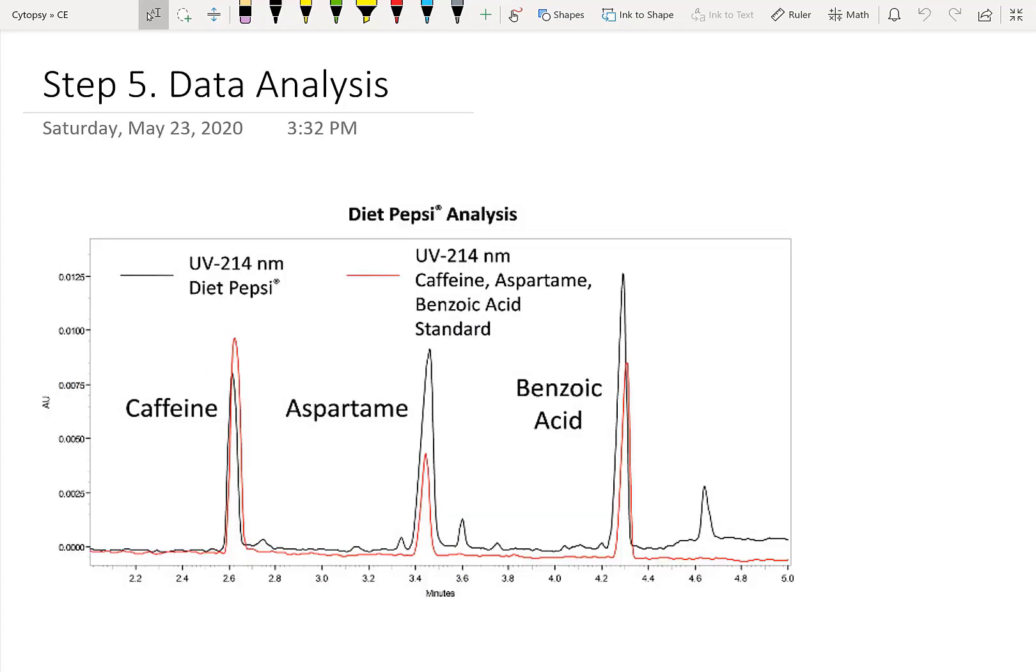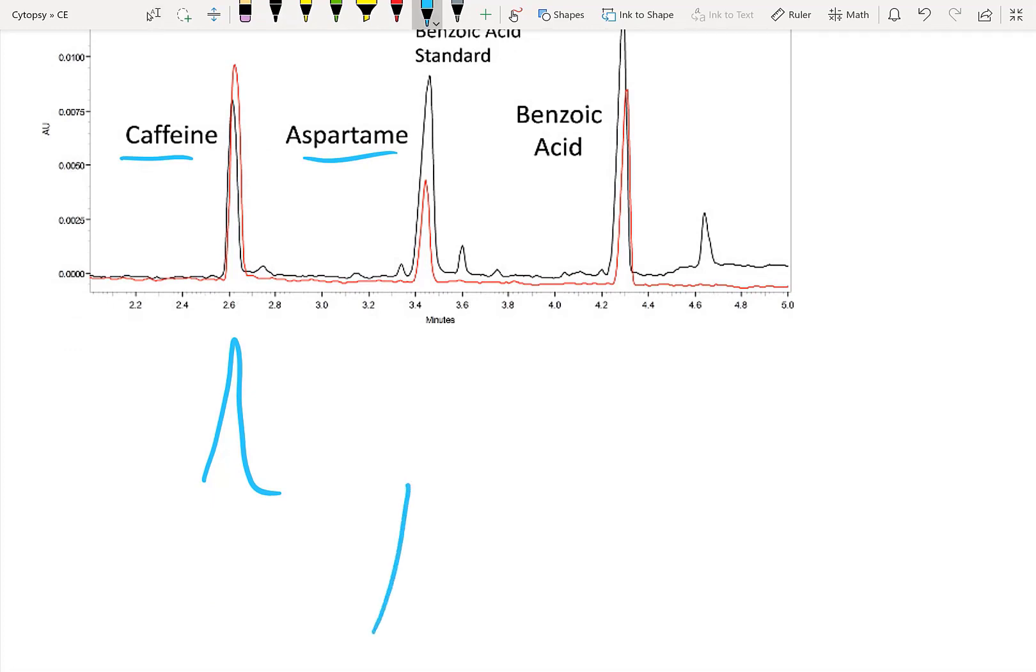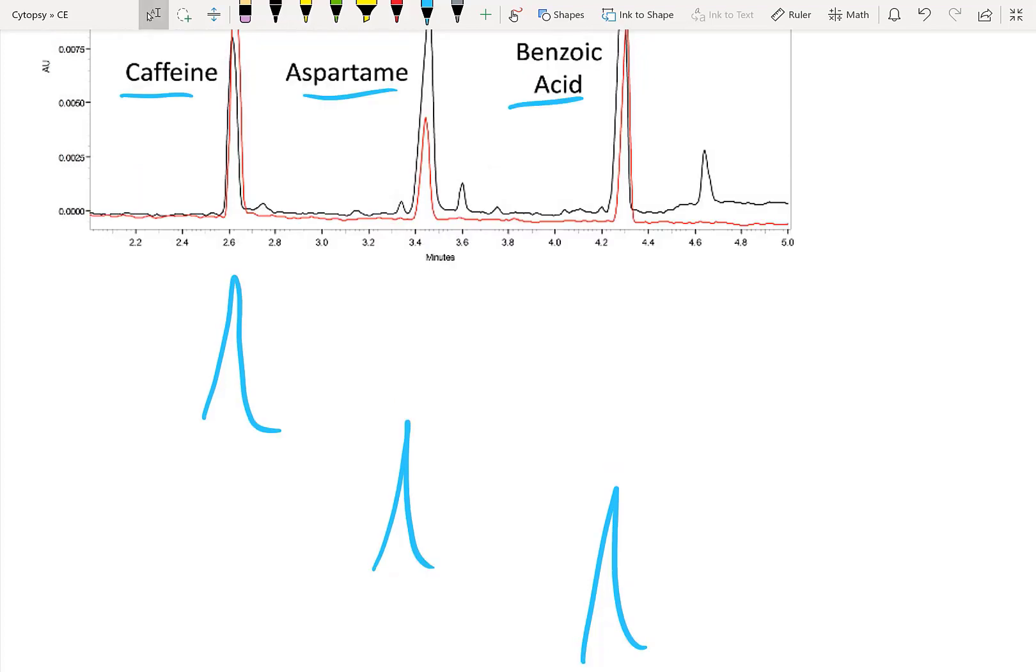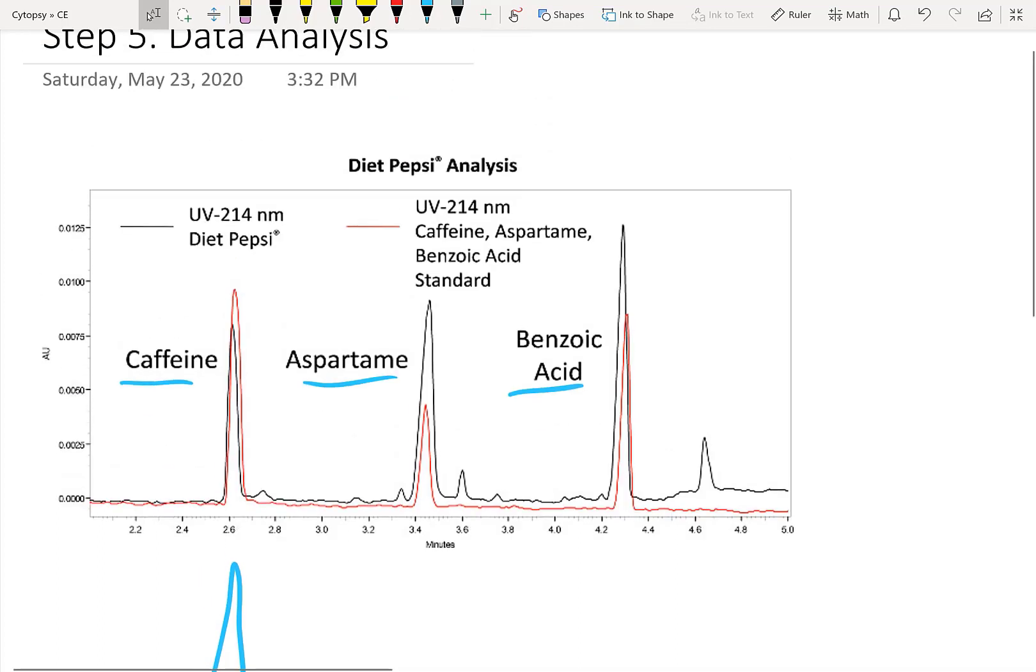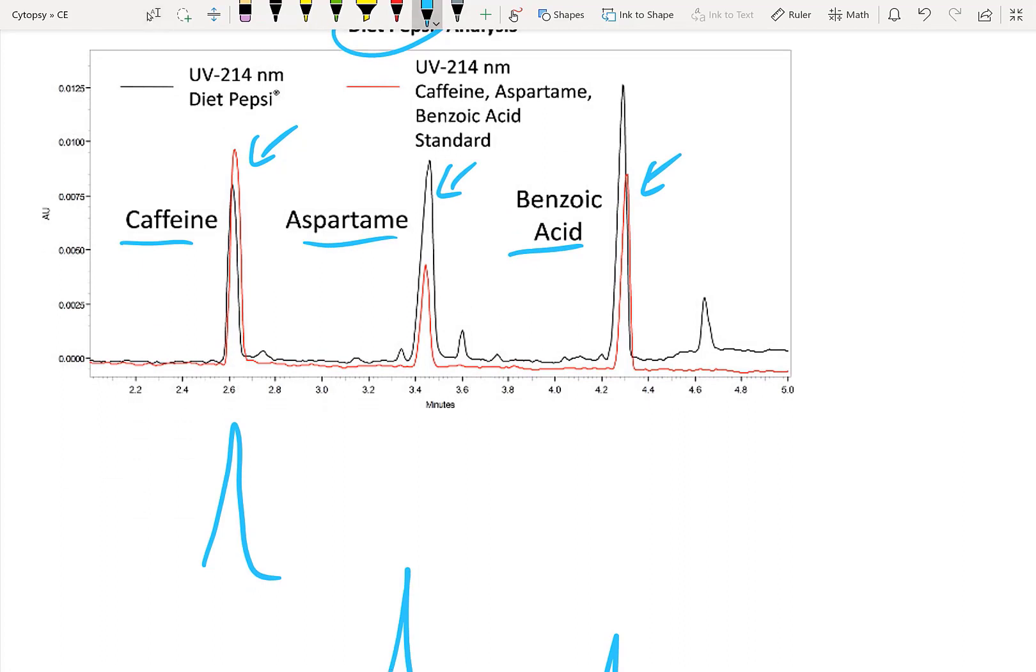And here's the final data from the JOVE protocol. As you can see here, we actually ran multiple samples. First we ran just caffeine and caffeine gave a peak here at 2.6 minutes. Then we ran aspartame and aspartame just by itself gave a peak here at 3.4 minutes. And finally we ran benzoic acid which gave a peak here at roughly 4.3 minutes. Then we ran diet Pepsi and we saw three different peaks all together, and each of the peaks corresponded to one of the individual components that we ran. So this is a really good way of showing what are the components of diet Pepsi.